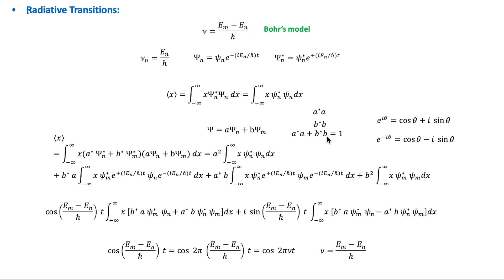Initially, when the electron is in the ground state, A equals one and B equals zero. When the electron is in the excited state M, B equals one and A equals zero. When it returns to the ground state, A equals one again and B equals zero. When the electron is in either quantum state N or M, the expectation value is constant and no radiation occurs. But during the transition from M to N, when both A and B are nonzero, the electron oscillates and radiation occurs — the system emits electromagnetic waves.